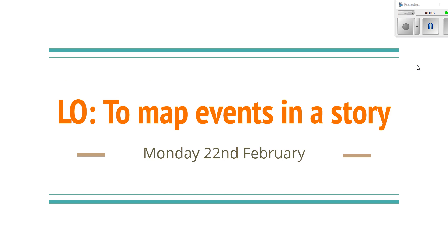Good afternoon, Year Five, and welcome to today's English lesson. What we're going to be doing today is again focusing on the book Odysseus and His Adventures, and what we're going to do is map events into a story. So first we're going to try and recap the events of the story that have happened so far in the book. You've done your storyboard in the last lesson, so you can use that to refer back to in this lesson, and that will help you when we create our map.